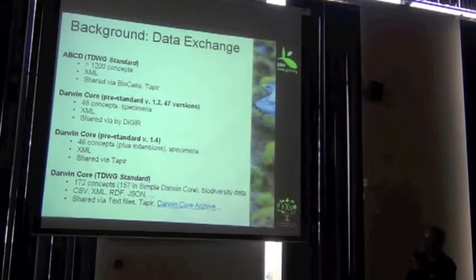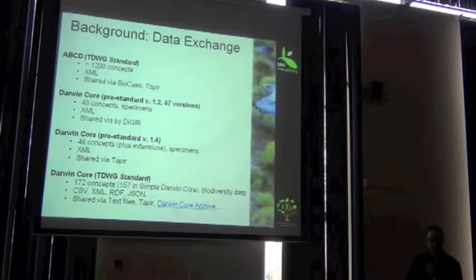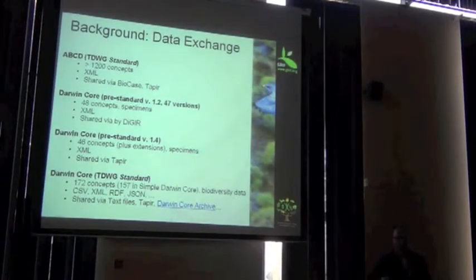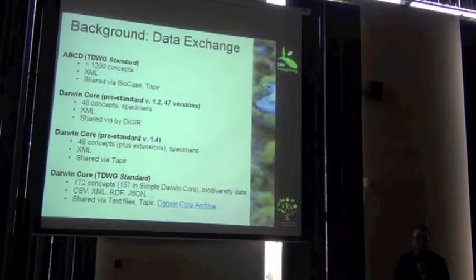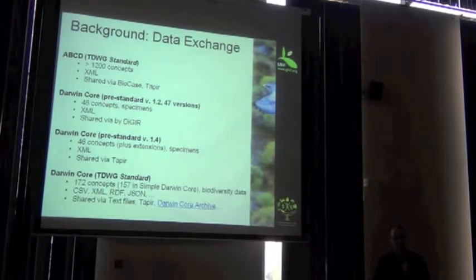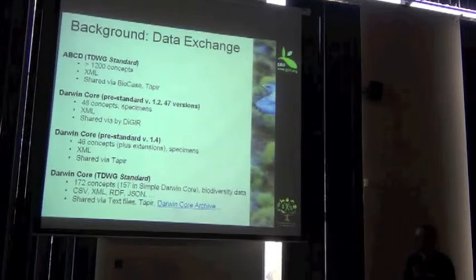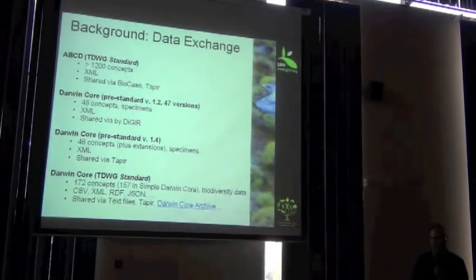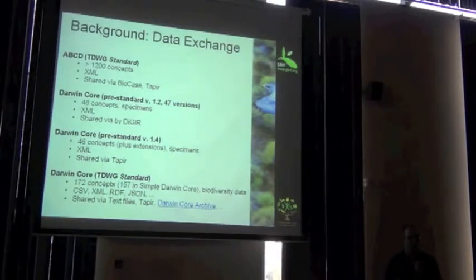ABCD contains over 1,200 different concepts, and they're related to one another. The data format where it's exchanged is XML, and quite often the protocol used to exchange it is BioCASe. The key here is it's got over 1,200 different terms to help you describe your data set, and that can be a bit overwhelming.